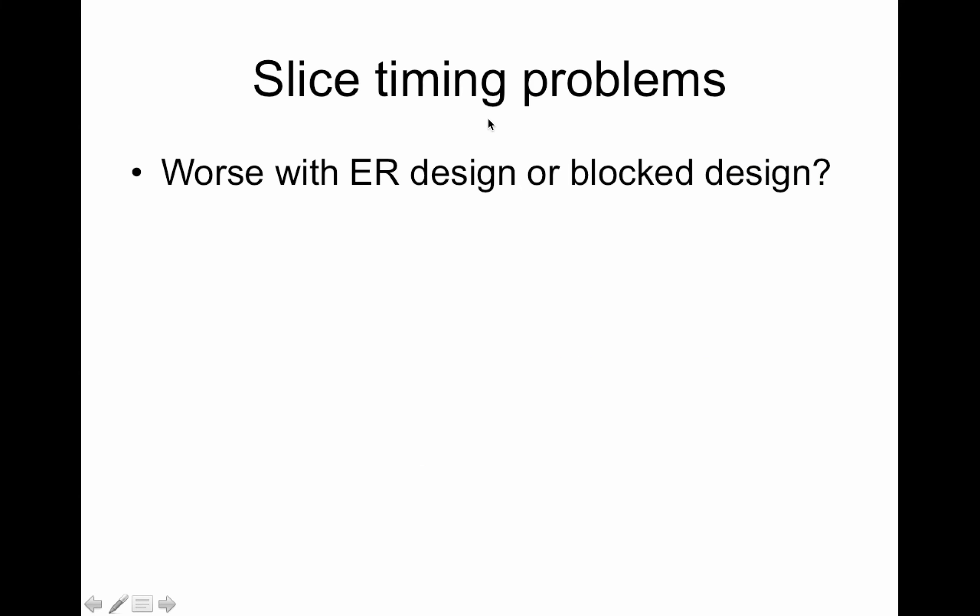A little thought: would slice timing problems be worse with an event-related design or a blocked design? Event-related means quick stimuli with fixation between stimuli; blocked means continuous stimuli with no fixation between. It will be worse for an event-related design where the trials are isolated, because you're trying to fit your model to a relatively short occurring event.